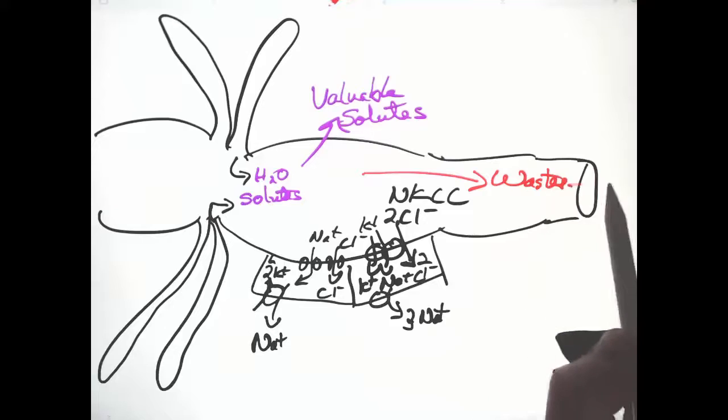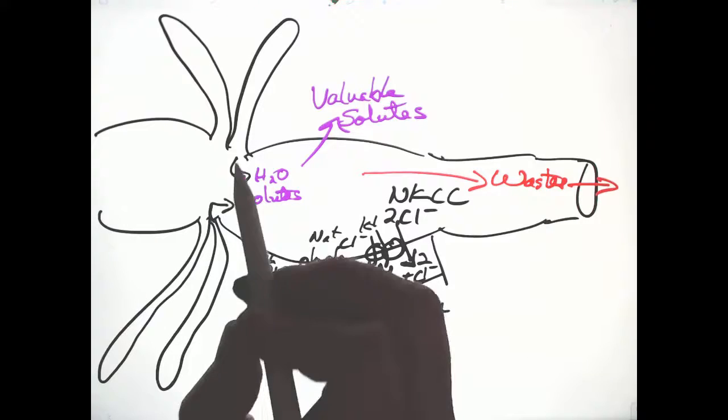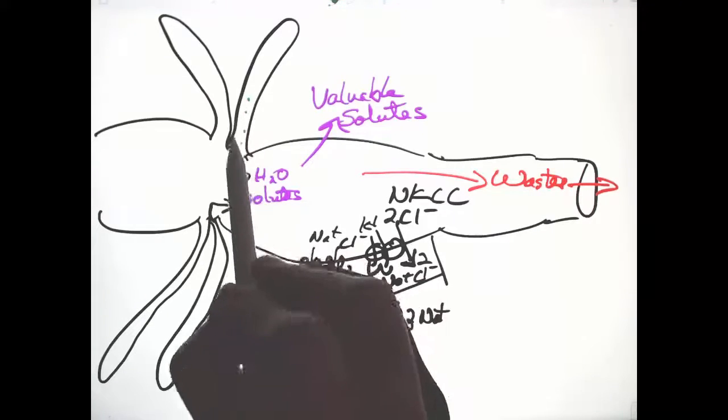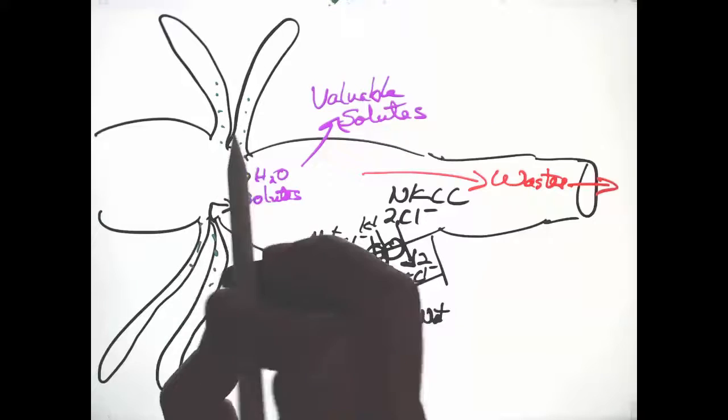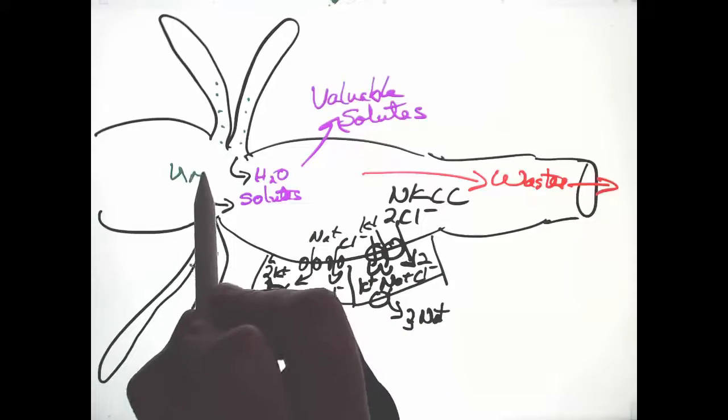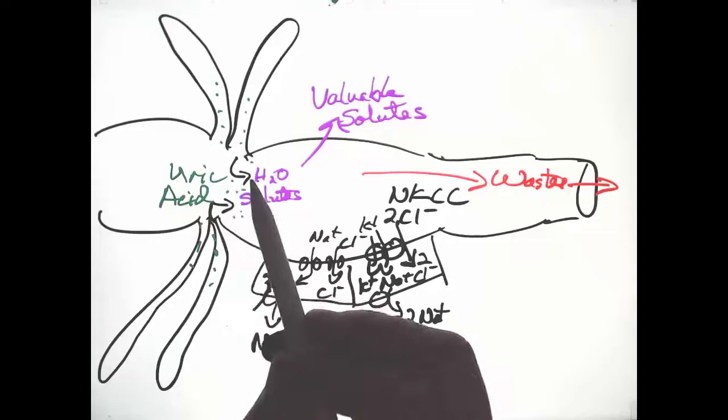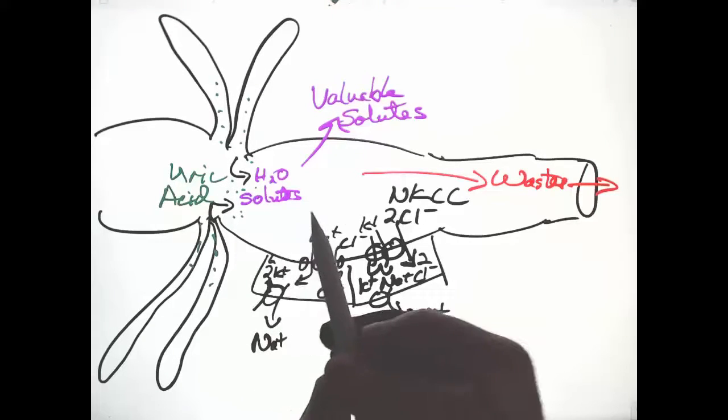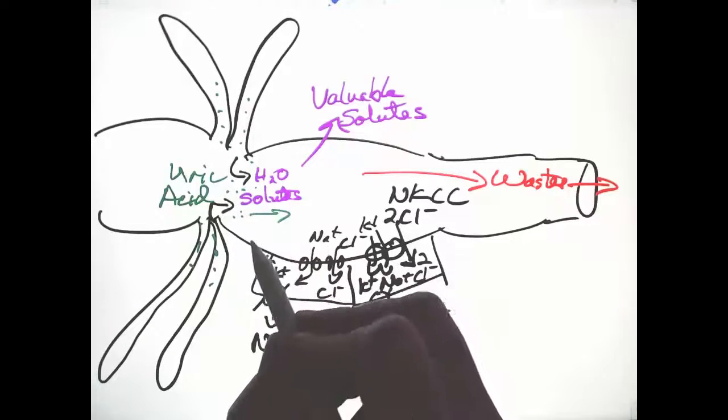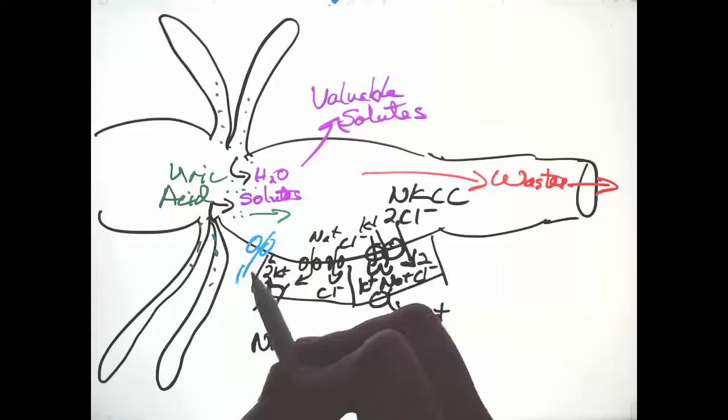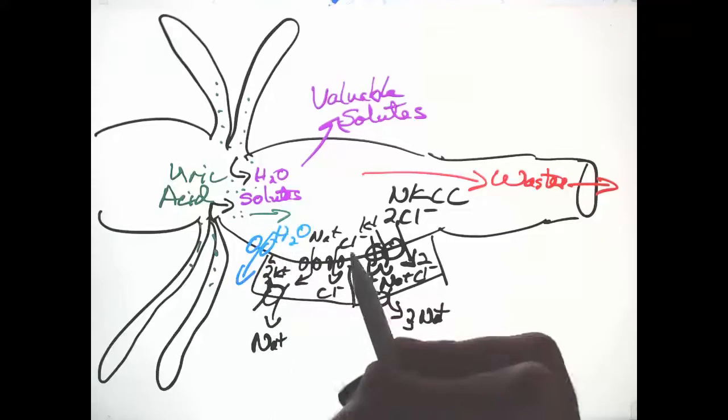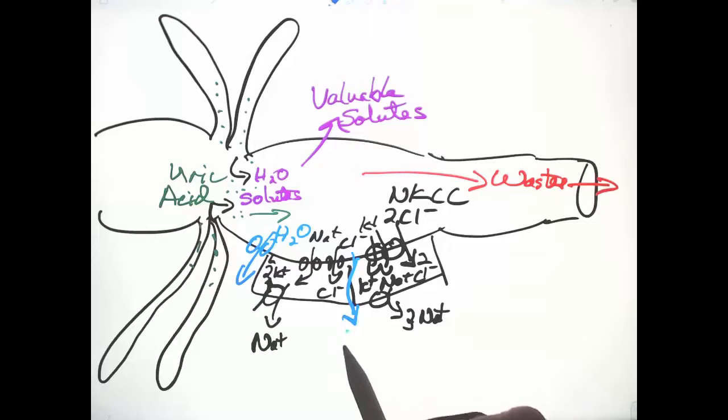Wastes are left behind to be excreted. In an insect, often the primary nitrogenous waste is uric acid, as in birds, which is in low concentration as the fluid enters the hindgut. But as water is removed, as water leaves following solutes, the uric acid is in higher and higher concentration.